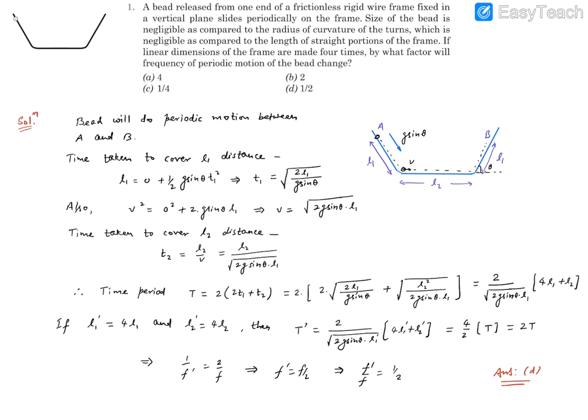Now we're going to make these linear dimensions 4 times. Let's say l₁' is the new dimension for this. This is l₂', this is l₁'. All have been made 4 times the previous values. So l₁' is 4 times l₁, l₂' is 4 times l₂. Let's substitute these numbers.